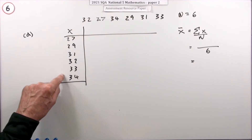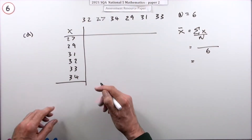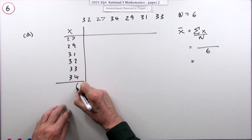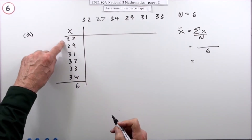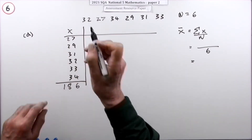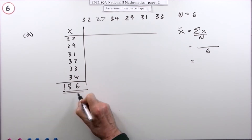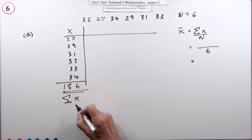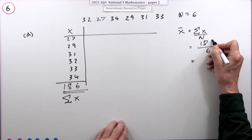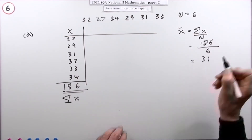Add these up - you can use a calculator, though they pair off nicely. The total is 186, and that divides exactly: 186 divided by 6 equals 31. So the mean is 31.